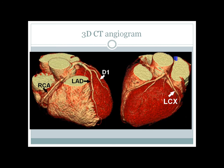Here you can see a very good 3D reconstruction of the heart along with the vascular territories. This is the aorta and the ascending aorta. This is the right coronary artery running from the aorta through the atrioventricular groove, giving off branches — this is probably the right ventricular branch — and then it courses downwards and behind.